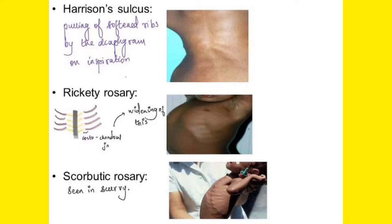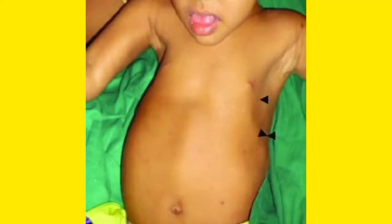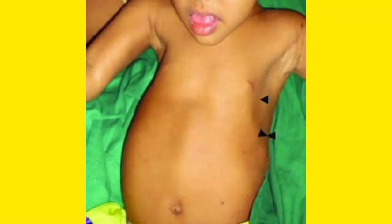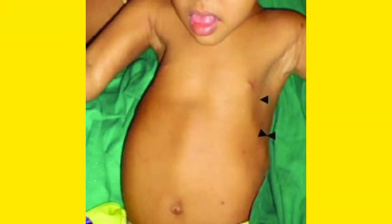Rickety rosary involves widening of the costochondral junction. Scorbutic rosary is a different finding associated with scurvy. This picture shows Harrison's sulcus: as the patient inspires, the softened ribs are pulled downward, forming a sulcus known as Harrison's sulcus — a very important point for rickets.